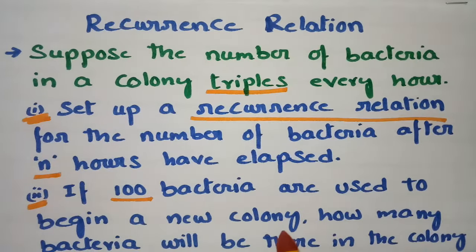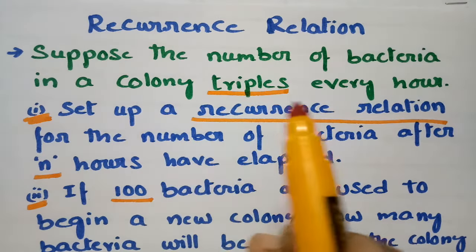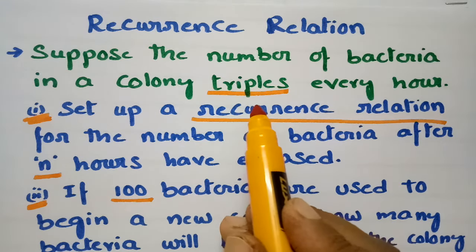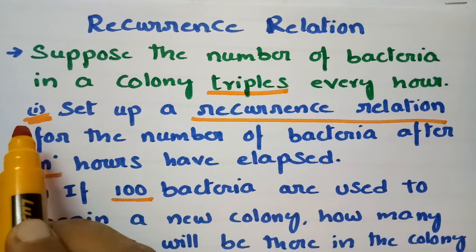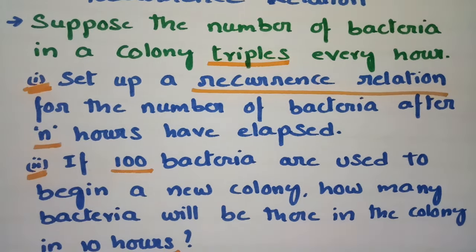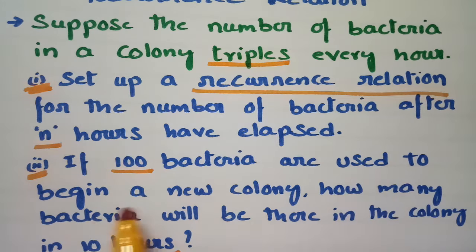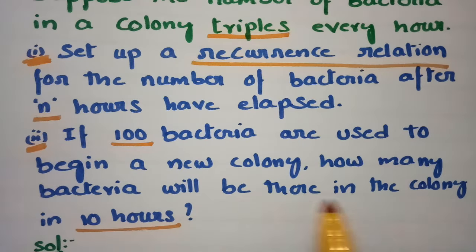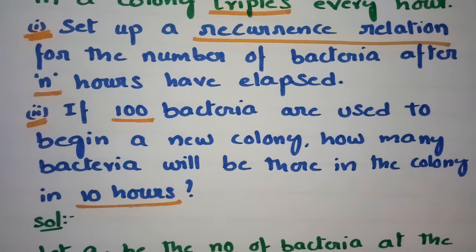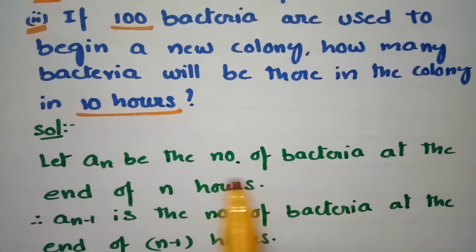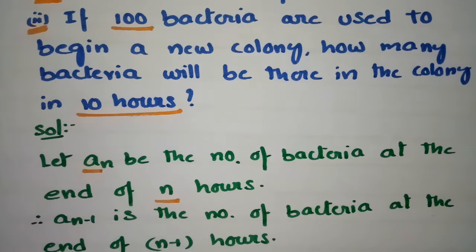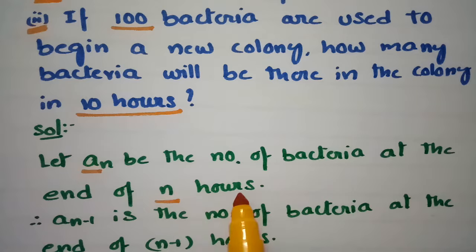The number of bacteria in a colony triples every hour — that is the basic information given. The first question is we have to set up the recurrence relation, next we have to find the explicit formula, and then determine how many bacteria will be there in 10 hours. For that, let An be the number of bacteria at the end of n hours.